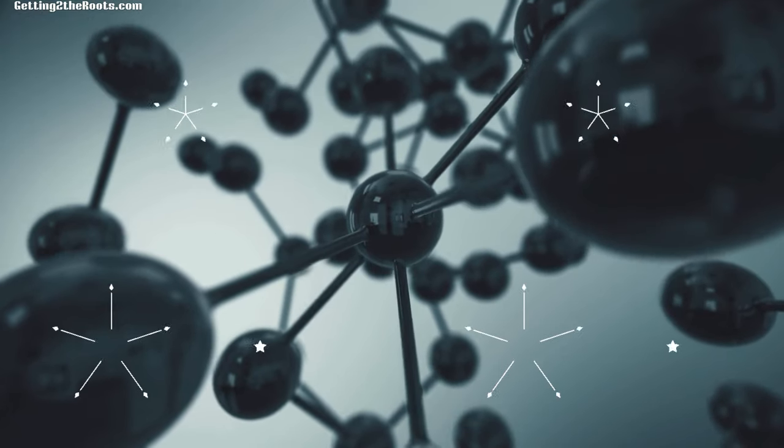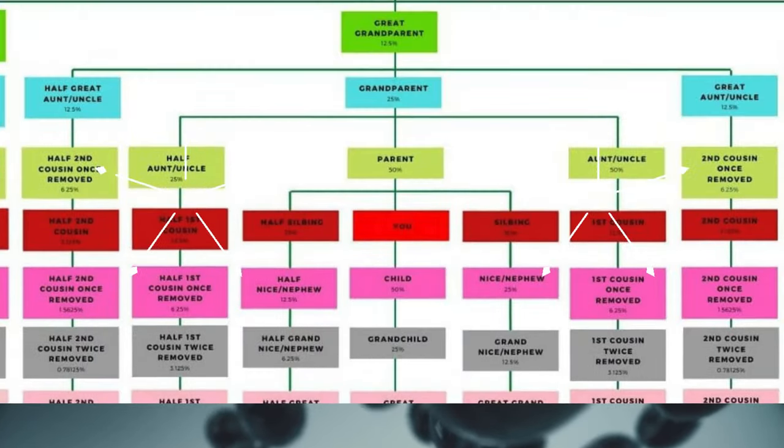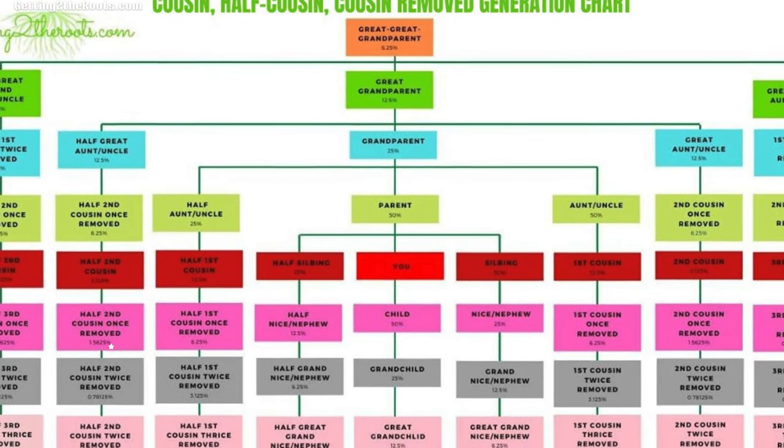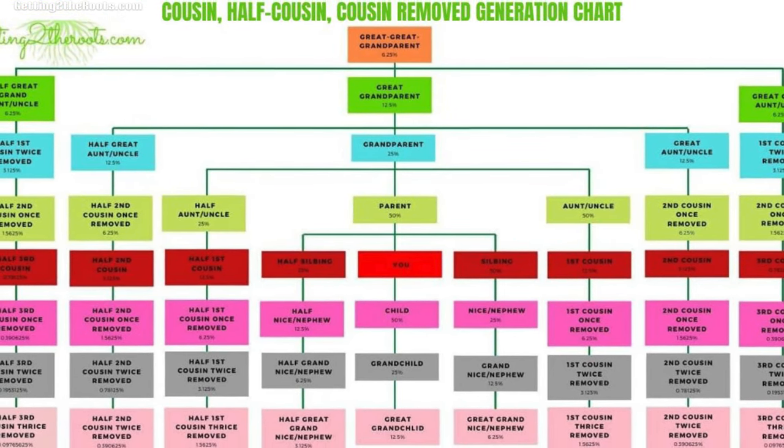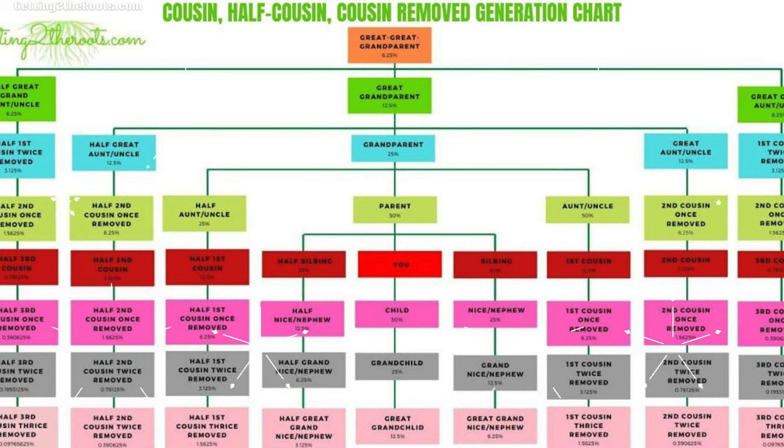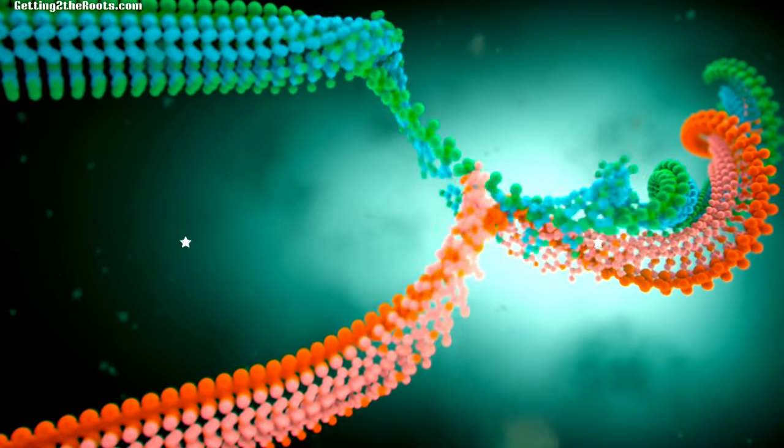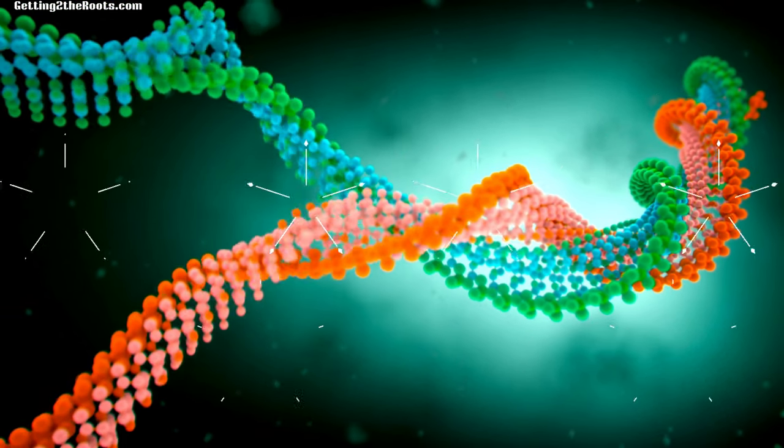For instance, siblings on average share about 50 percent of their genetic code, equivalent to approximately 3,400 centimorgans. Yet due to the randomness of genetic recombination, this value may vary, and two full siblings may share anywhere between 2,200 and 3,400 centimorgans.